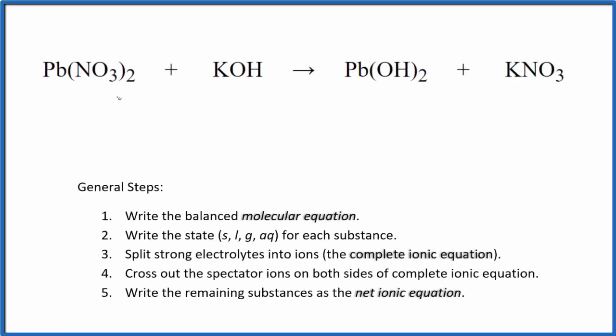To write the balanced net ionic equation for Pb(NO3)2 plus KOH, this is lead(II) nitrate plus potassium hydroxide, first we need to balance the molecular equation. This is the molecular equation.